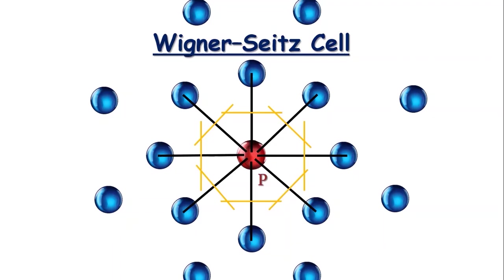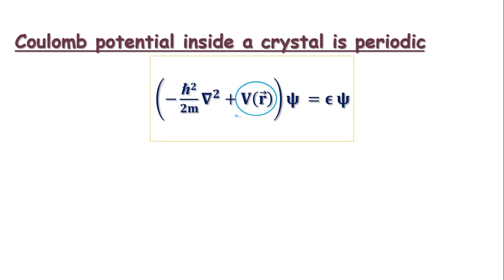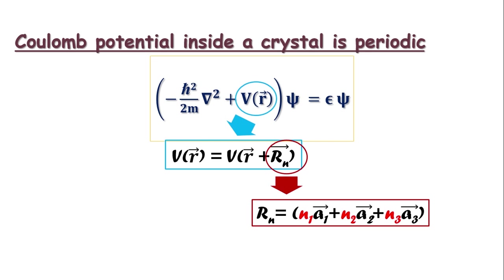As a consequence in Schrodinger equation, the potential energy function should be of the form V of r equals to V of r plus Rn, where Rn is actually just the translational vector. So Rn equals to N1A1 vector plus N2A2 vector plus N3A3 vector, provided N1, N2, and N3 are integers and A1, A2, A3 are just unit lattice vectors.